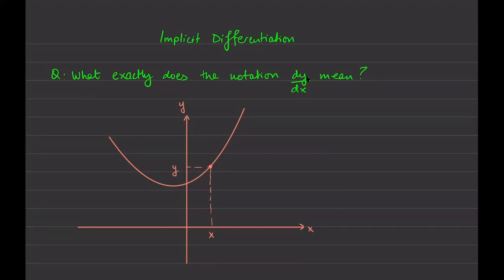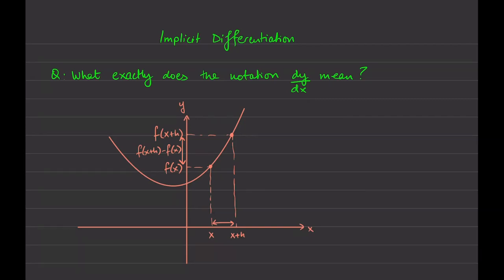This idea hopefully sounds familiar. If we start with this point and move a lot, calling that distance h, we've seen this construction before. This point would be f of x plus h. Another way to represent the y-coordinate would be f of x. This really becomes f of x plus h minus f of x — how much is it changing by? You make a secant line, find the slope of the secant line, and that is our old friend, the difference quotient.